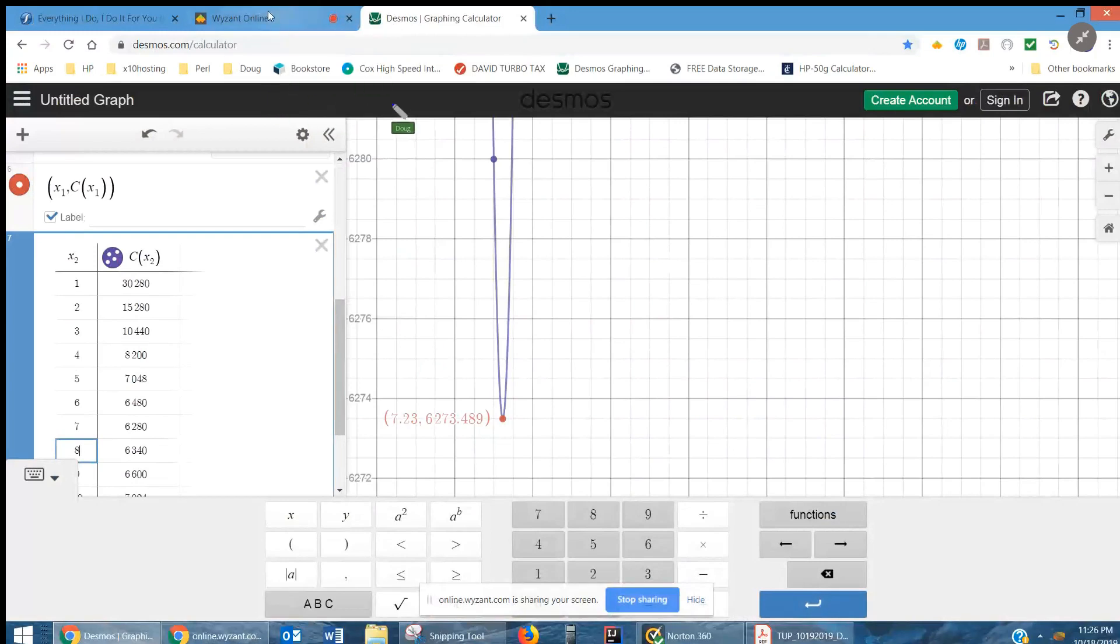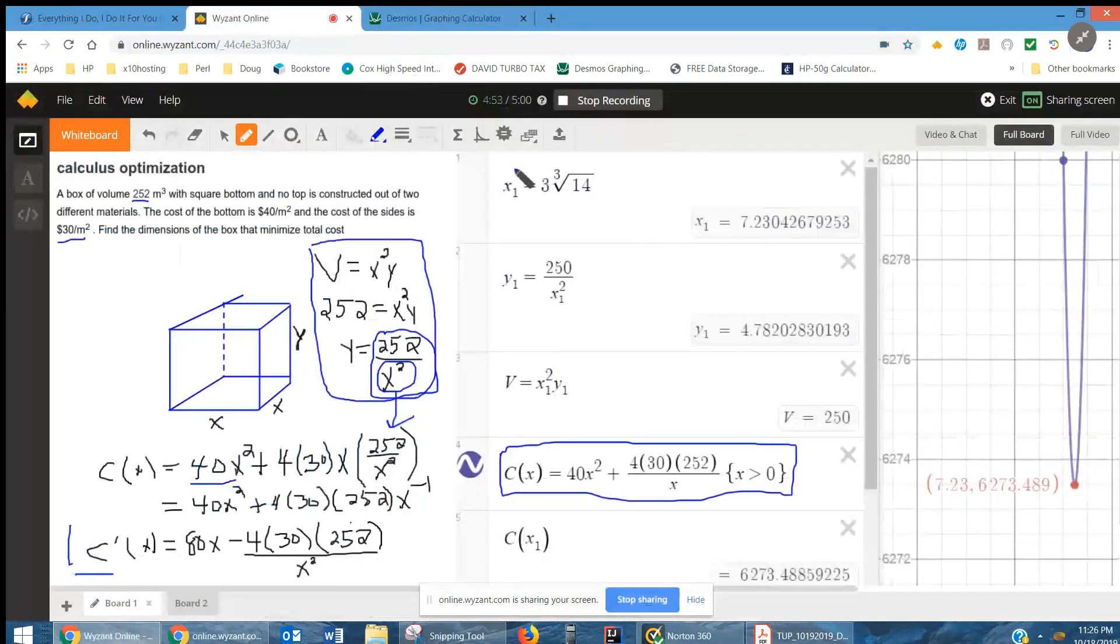I hope that to be totally precise, we'd have to also prove that that value of x generates a minimum value by using one of the tests that proves that a critical number generates either a maximum or a minimum. But we'll skip that step for right now.